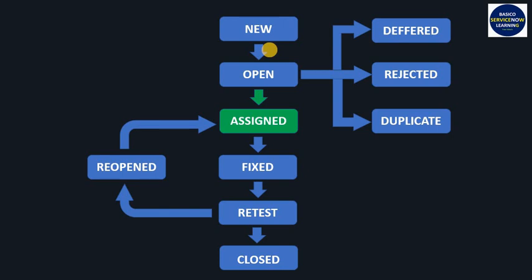Once the bug is assigned to a developer to fix, the developer works on that particular bug, modifies the code, and fixes it. Once the bug is fixed, it is assigned back to the software tester for retesting.